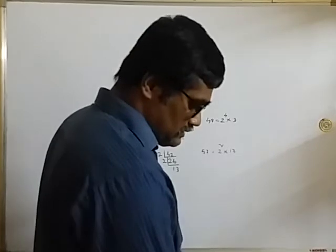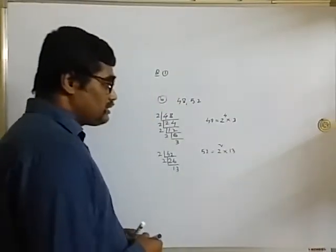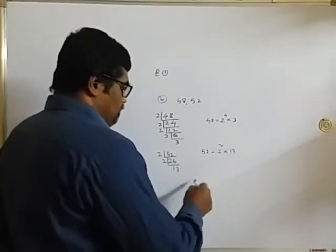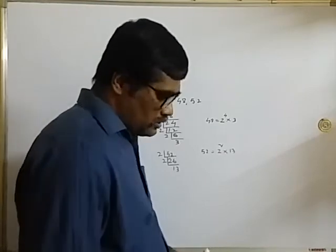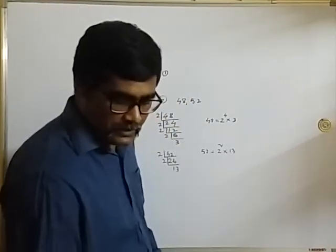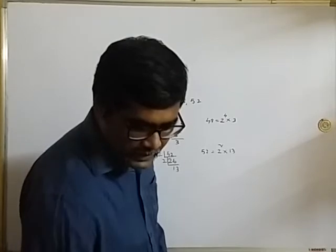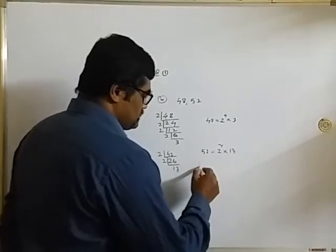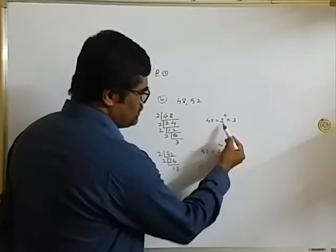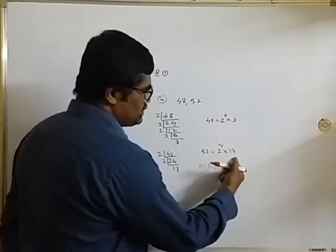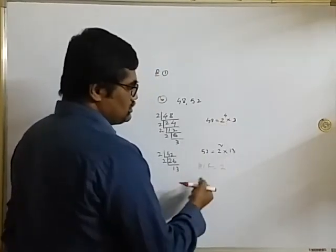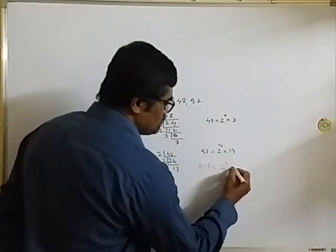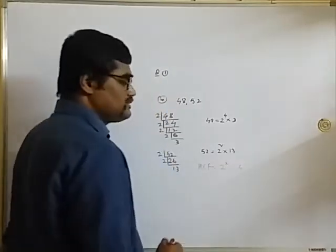For HCF, look for common factors only. The only common factor here is 2, because 13 is not present in 48 and 3 is not present in 52. Now look at the lowest power of 2: powers are 4 and 2 — the lowest is 2. So HCF = 2 squared = 4.